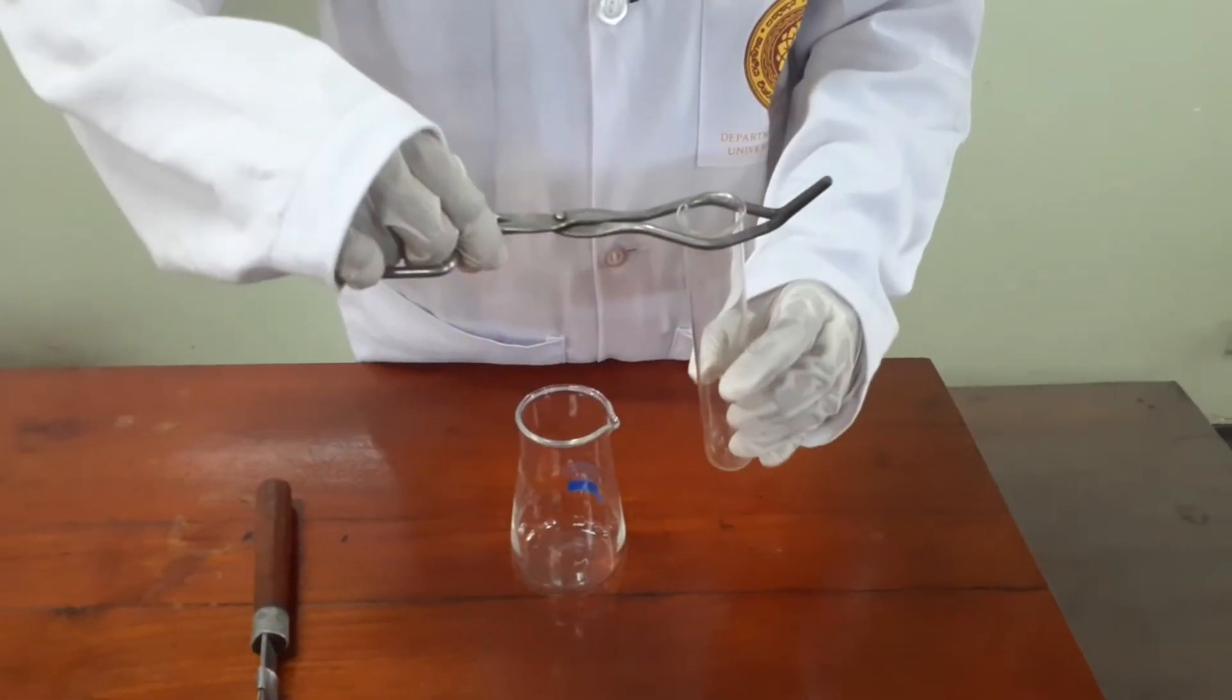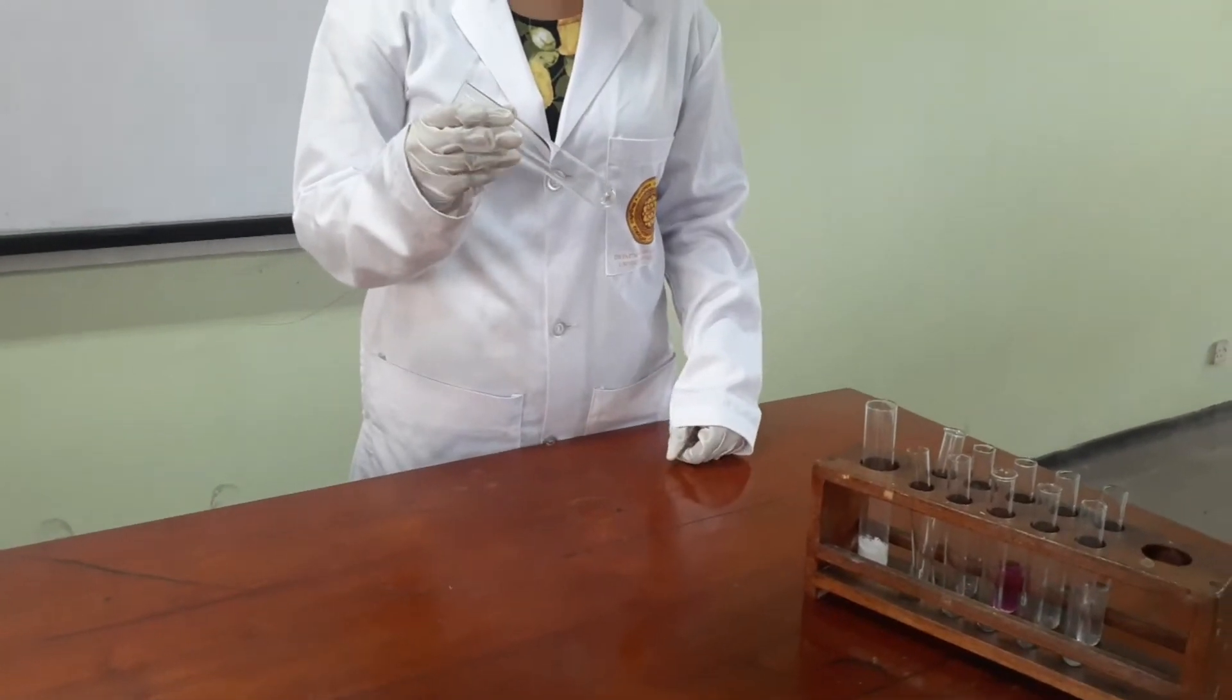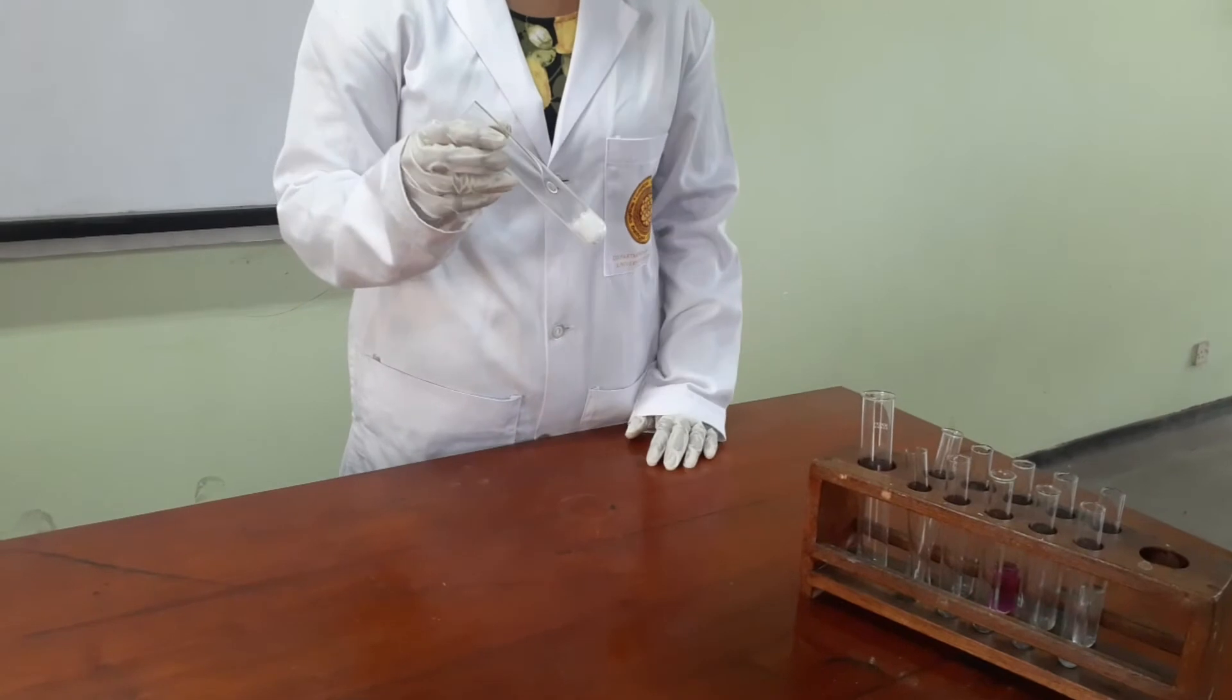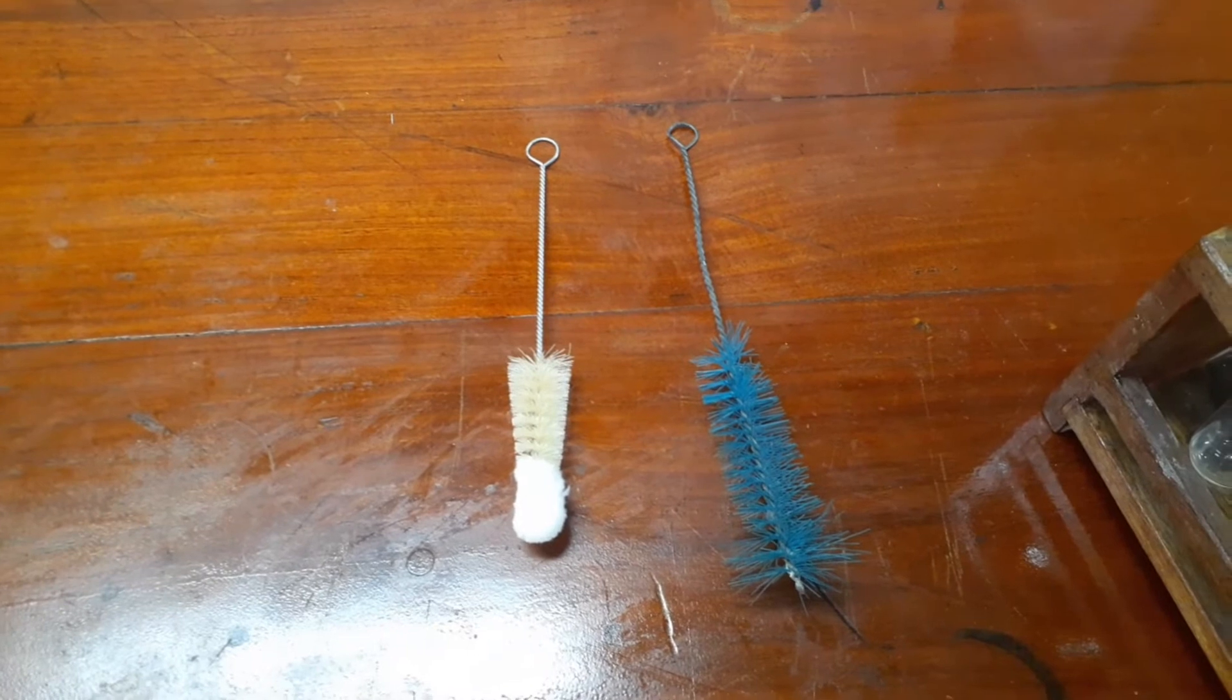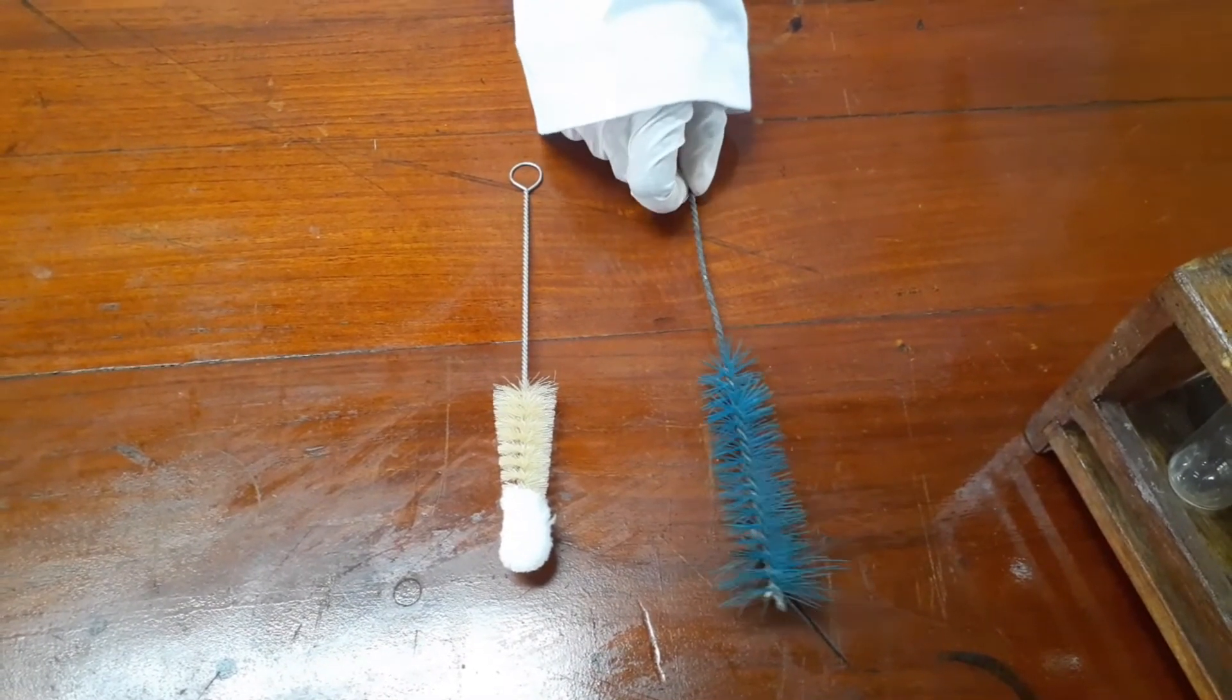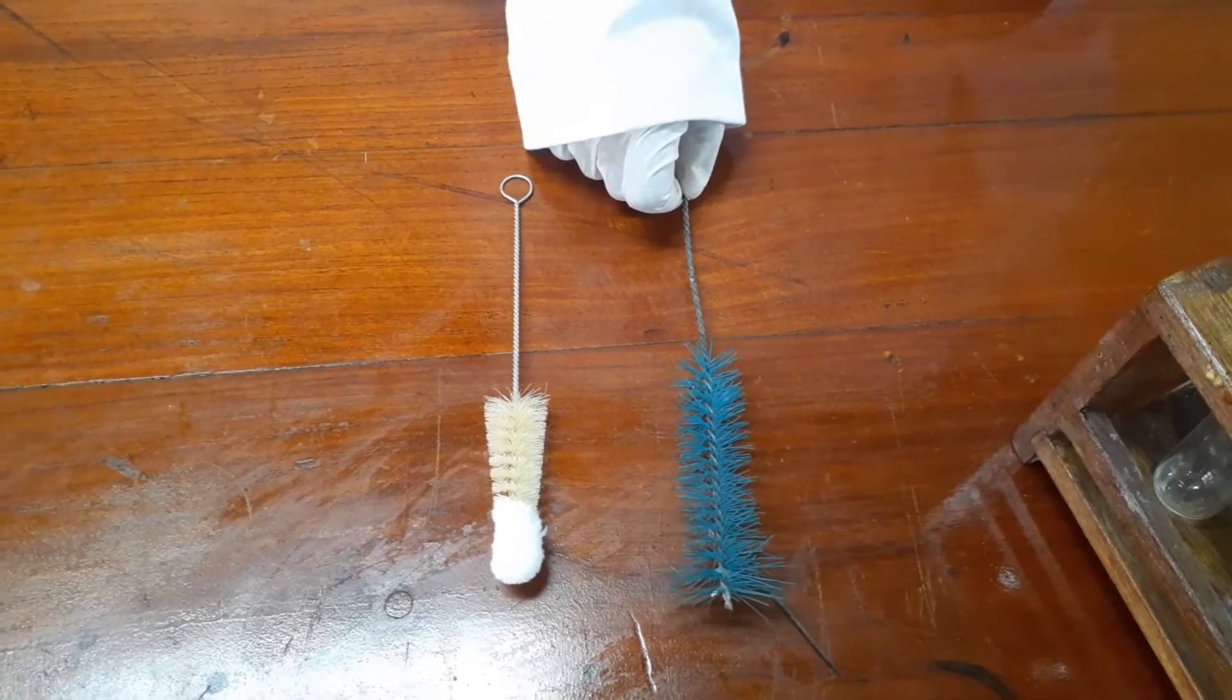We do not use tongs to hold boiling tubes as they can slip away from the tongs. If the test tubes and boiling tubes have any impurity, we have to wash them with clean water, and if they are insoluble in water, we have to wash them with dishwashing liquid. And those are the brushes that we use to clean glassware in the laboratory. If the glassware are contaminated with acid, we can use acid-resistant brushes instead of using these nylon brushes.